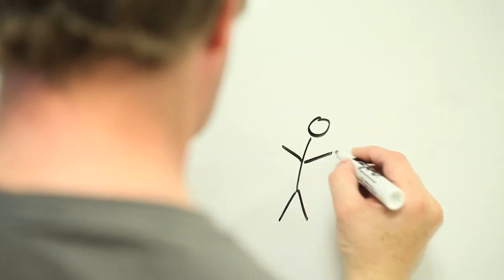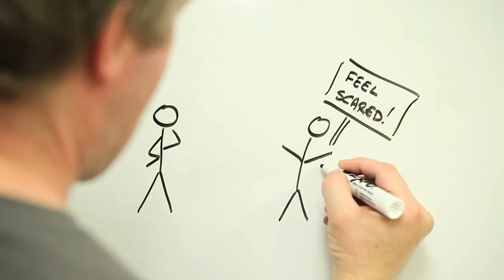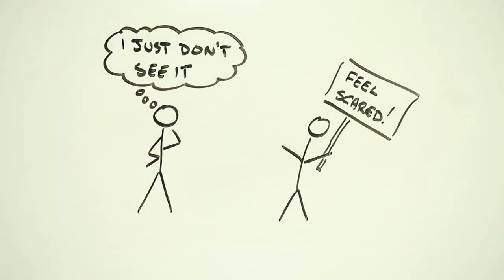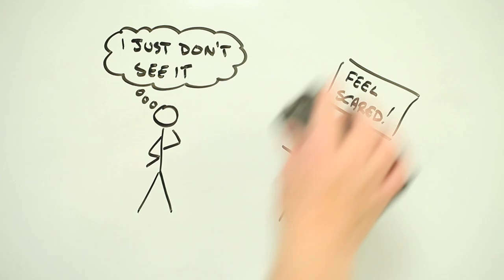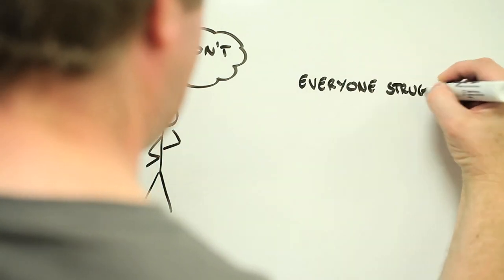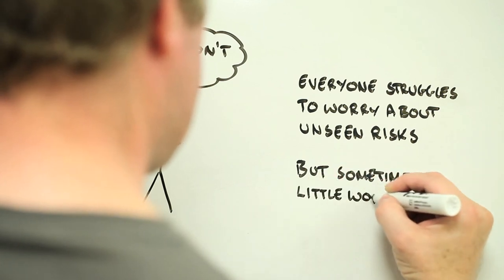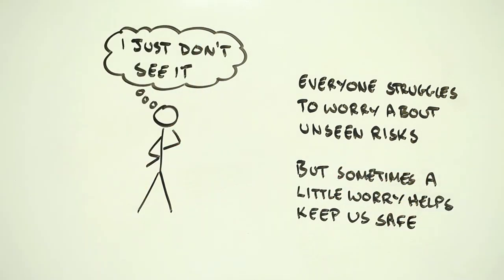It's hard to feel worried about something you've never seen. The availability heuristic ensures that, and it's something that's built into all of us. But if we want to avoid infectious diseases, we need at least a little bit of worry. We'll be back with future Risk Bites to talk more about how feelings influence the way we think about risk. But in the meantime, stay safe and feel safe too.